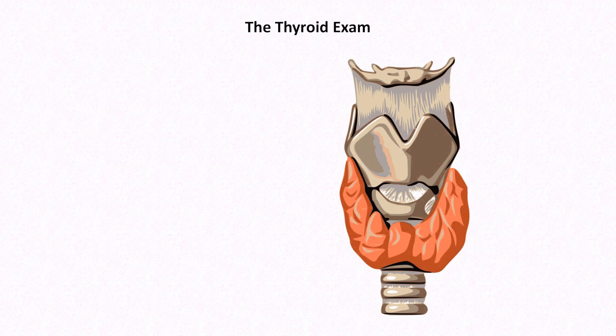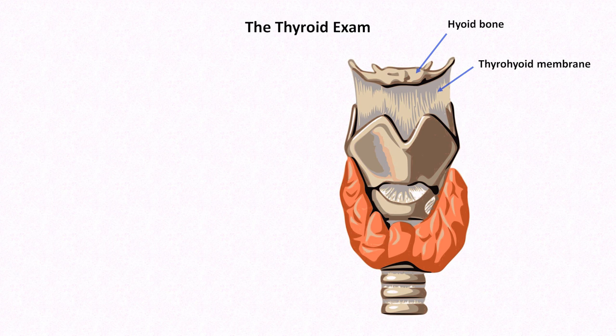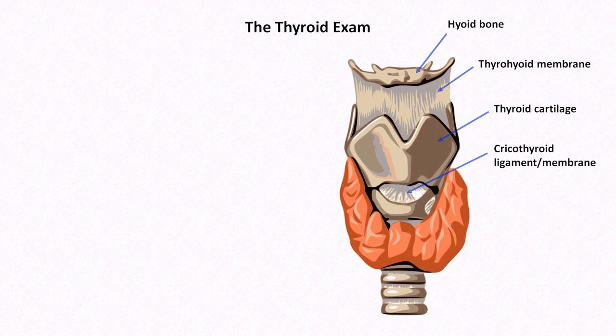The thyroid is a midline structure located in the mid-neck. It has a right and left lobe joined by a narrow isthmus, and has a close and relatively consistent relationship to other structures. Moving from superior to inferior, there is first the hyoid bone, which is not usually palpable in the midline; next is the thyrohyoid membrane, also non-palpable; and then the thyroid cartilage, which is the most prominent landmark in the neck — what laypeople call the Adam's apple. Immediately below the thyroid cartilage is the cricothyroid ligament or membrane, the location of cricothyroidotomies, a procedure rarely used to obtain an emergent airway in situations of upper airway obstruction.